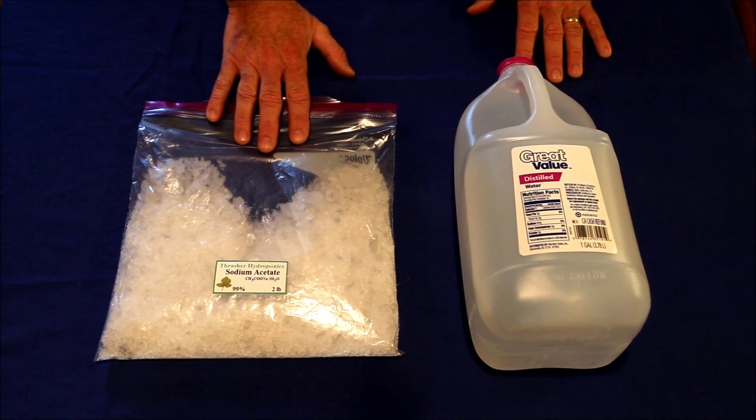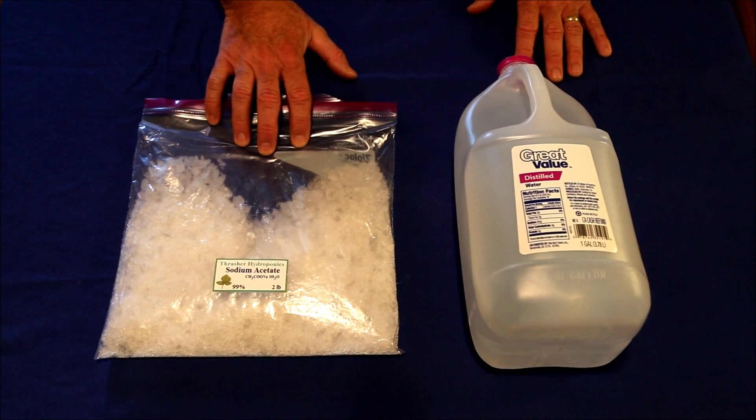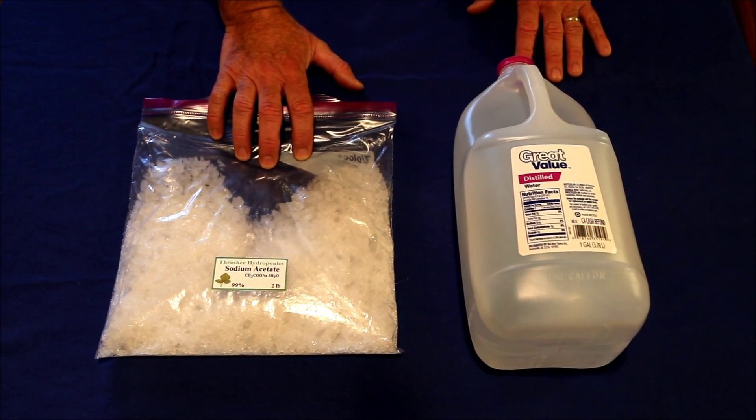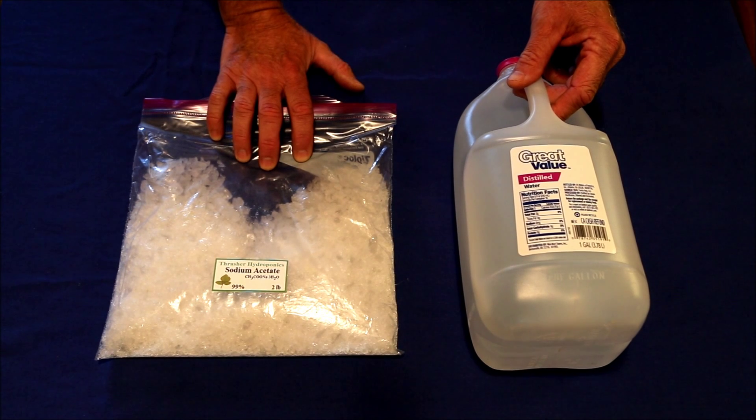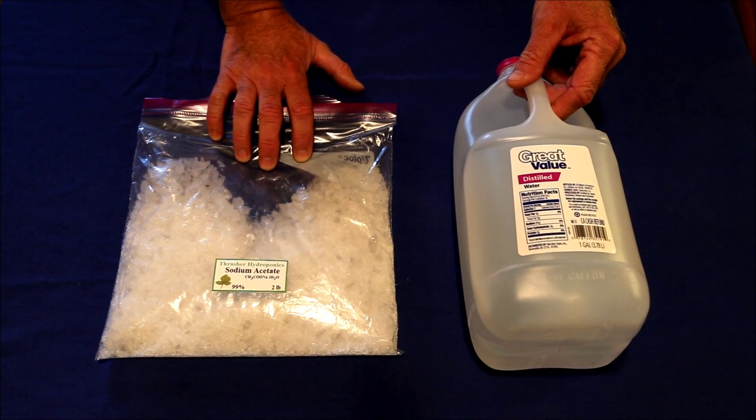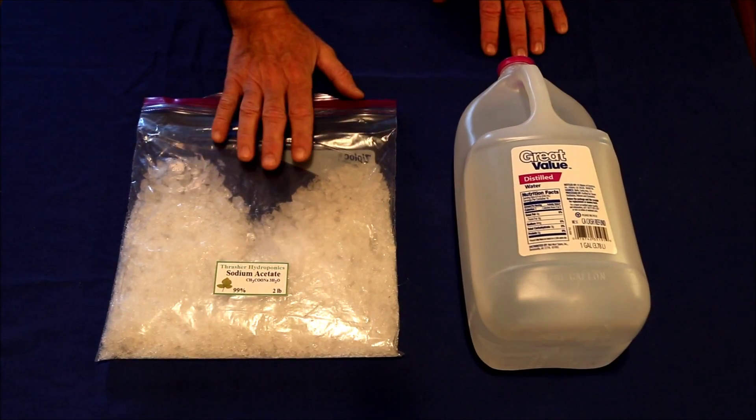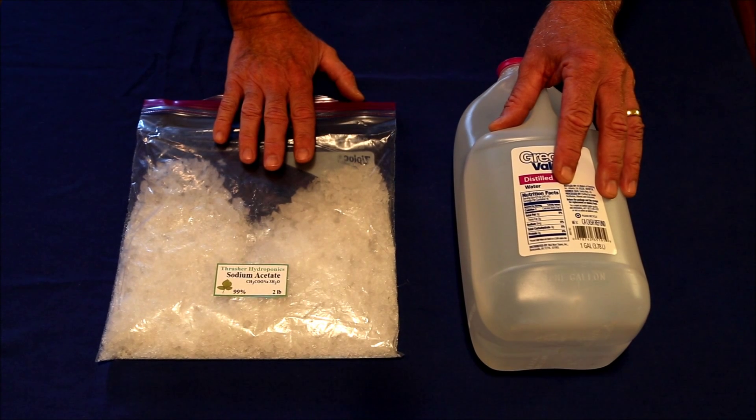Purchase sodium acetate online. I got two pounds from Amazon for $15—it's fairly cheap. It looks like a lot, but it has a very high solubility in water, so you can go through this quite quickly. I prefer mixing it with distilled water because it seems to be more stable. Tap water has lots of minerals and particulates that can spontaneously cause the mixture to crystallize.